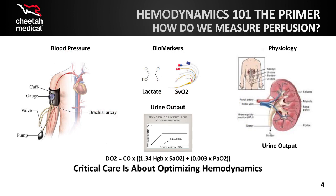So, we agree that adequate tissue oxygenation and perfusion are important. Clinically, how do we measure and assess perfusion? Blood pressure is, of course, our primary bedside measure of perfusion. As long as the mean arterial pressure, MAP, is greater than 65, or systolic blood pressure, SPP, is greater than 90, we generally assume that each organ bed will auto-regulate its own blood flow, providing adequate tissue perfusion to meet the tissue's metabolic needs. Biomarkers such as lactate or SVO2 are additional measures, which, if abnormal, may indicate inadequate tissue perfusion.